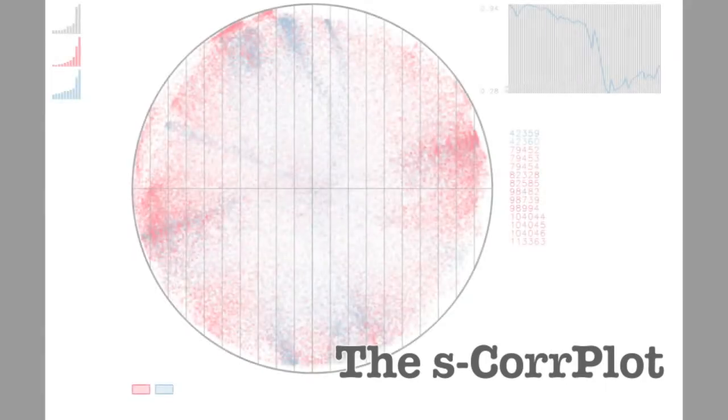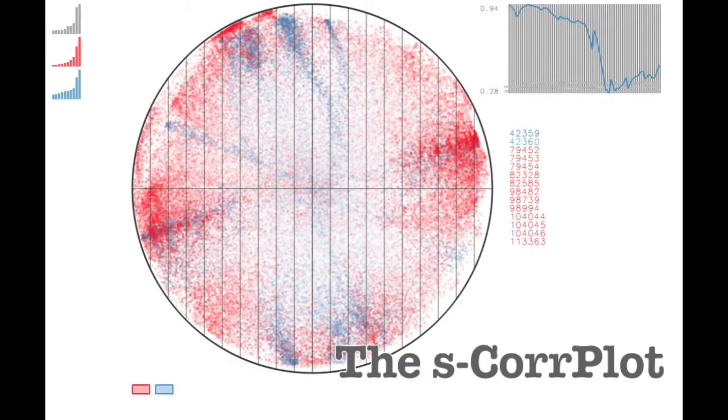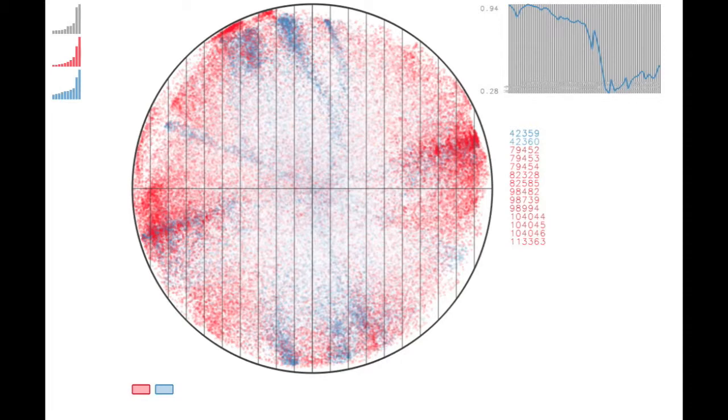We present a new spatial correlation scatter plot called the S-Core plot. The S-Core plot spatially encodes correlation by projecting variables onto a 2D scatter plot using a geometric interpretation of correlation.